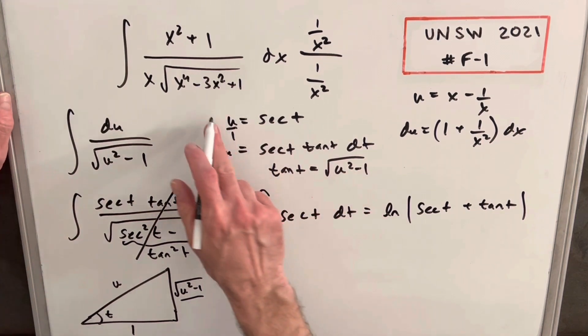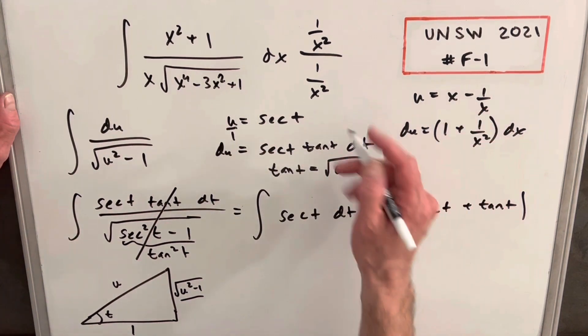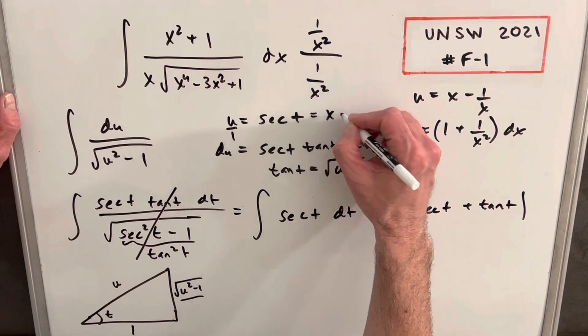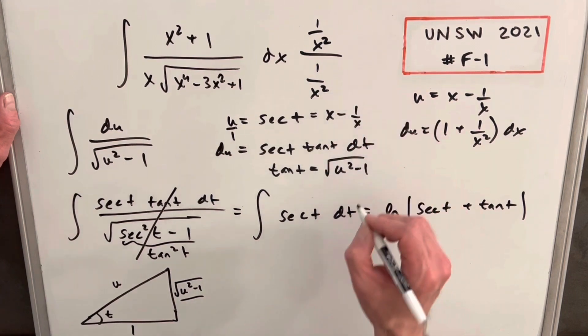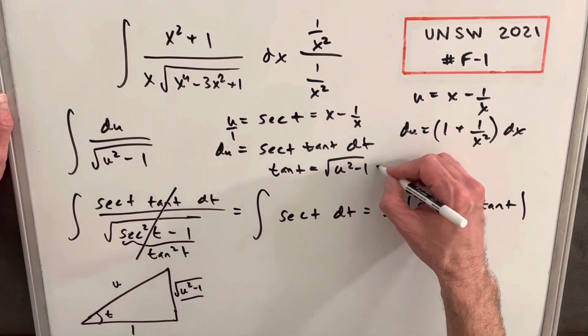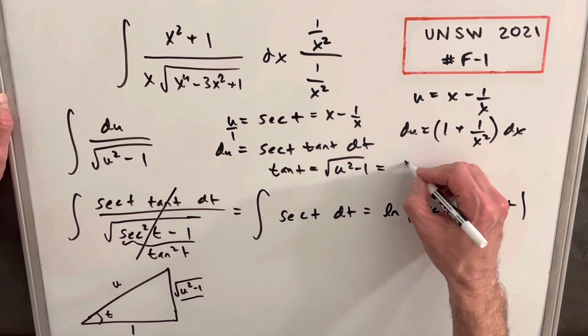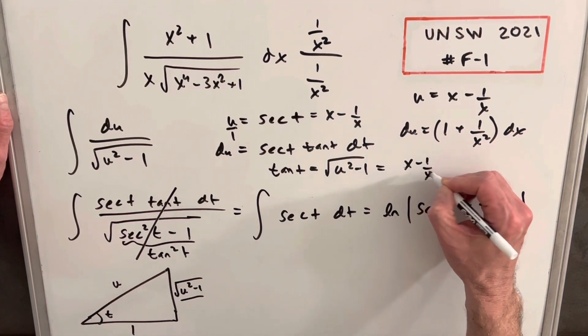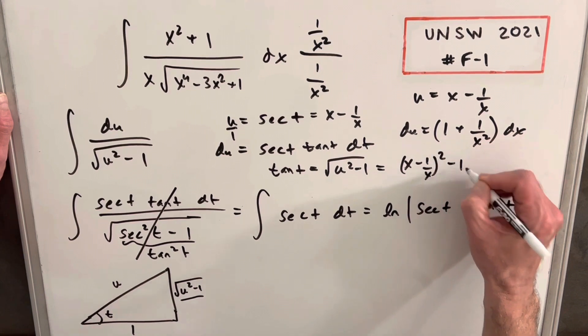Before I plug this in, let's just do a little simplification. We know our u is secant t, but u is this, so our secant t is going to be x minus 1 over x. And then with tan t, let's also write this in terms of x. So we have our u squared, so it's going to be x minus 1 over x squared minus 1.